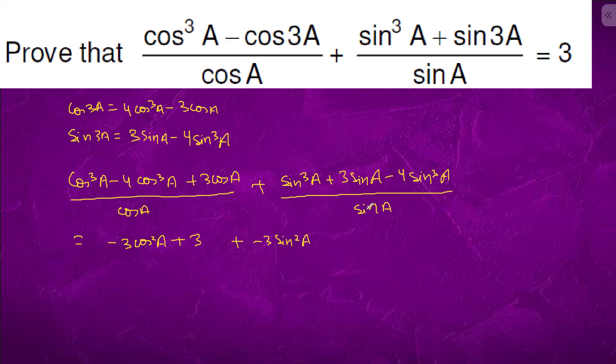We have 3 upon 3. So this is minus 3cos²A minus 3sin²A, which comes out to be minus 3. Then 3 plus 3 is 6, which equals 3.